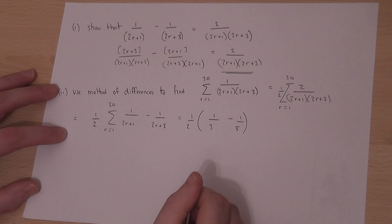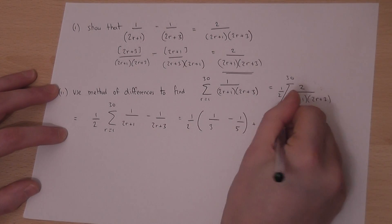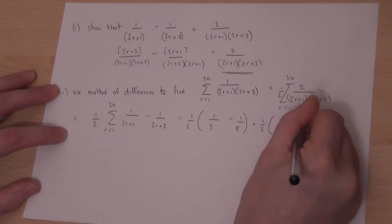And then let r equal to 2. I get 1 over 5 minus 1 over 7.